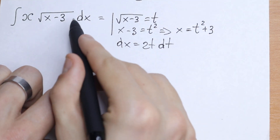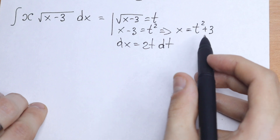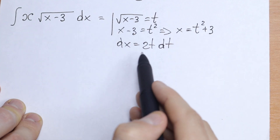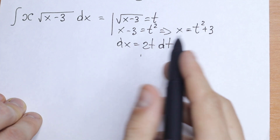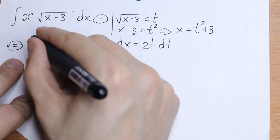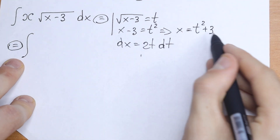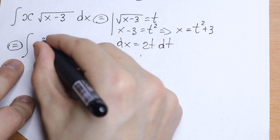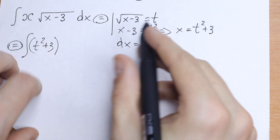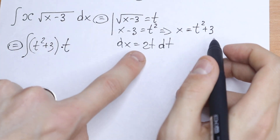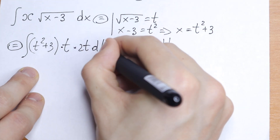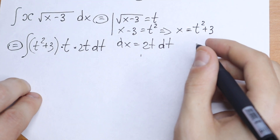So dx equals 2t dt, and our substitution gives us x equal to t squared plus 3. The square root of x minus 3 becomes t. Let's put all of these elements into our integral: we get the integral of (t squared plus 3) times t times 2t dt.